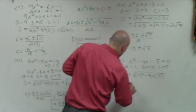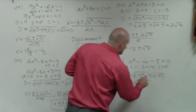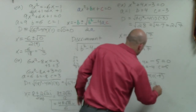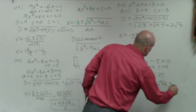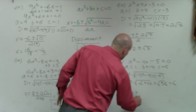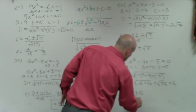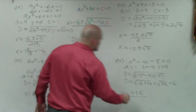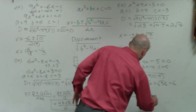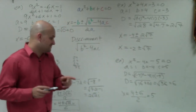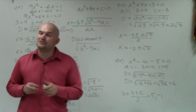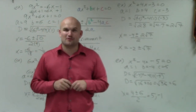The discriminant is √(16 + 20) = √36 = 6, since negative 4 times negative 5 is positive 20. Now solving: x = (opposite of b ± discriminant) / (2a) = (4 ± 6) / 2. So 4 + 6 = 10, divided by 2 equals 5; and 4 − 6 = −2, divided by 2 equals −1. Ladies and gentlemen, that is how you solve a quadratic equation using the quadratic formula.